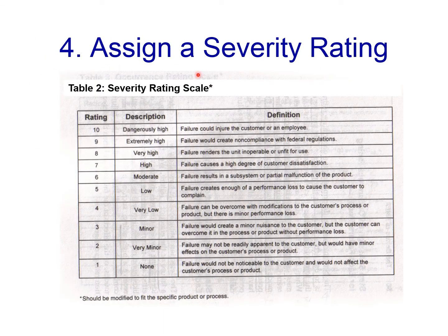The next step is to assign a severity rating for each effect. This is a generic measure for severity that can be tailored to fit a specific product or company. The highest rating is 10 and the lowest is 1. A rating of 1 means none — the failure would not be noticeable at all. A rating of 10 means dangerously high — the failure could injure the customer or an employee. In between, there are various shades and levels of severity to select from when assigning a severity rating for the effect.